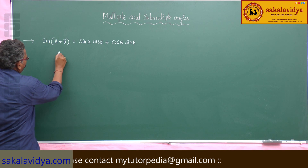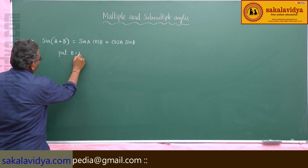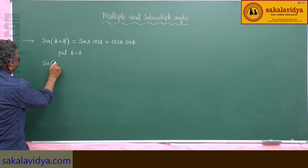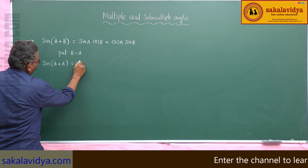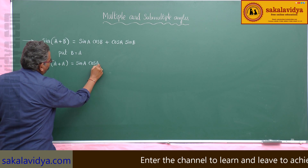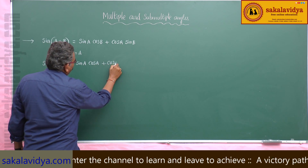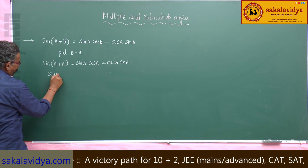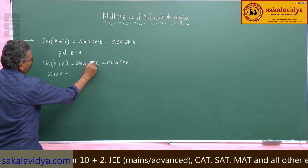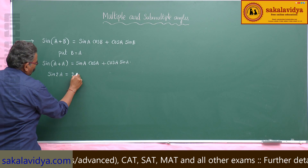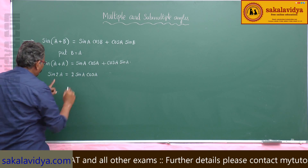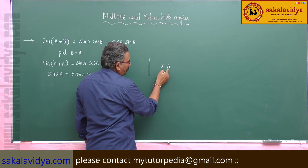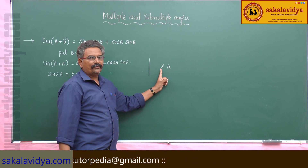For example, if we put b equal to a, we get sin(a + a) equals sin a cos a plus cos a sin a. So sin 2a equals sin a cos a plus sin a cos a, which gives us 2 sin a cos a. Here, 2a is a multiple of a.